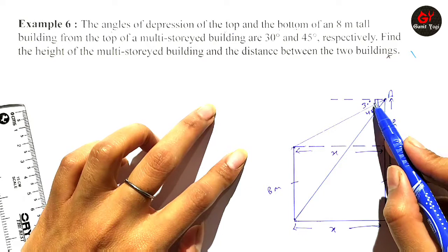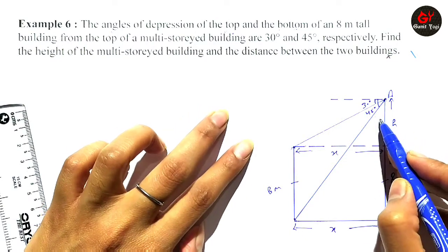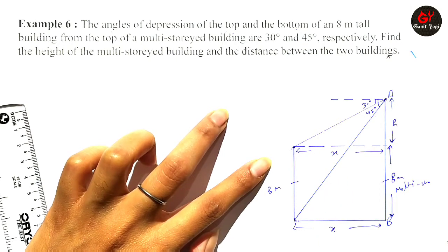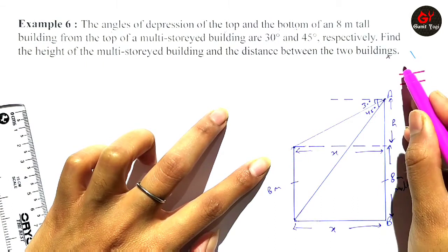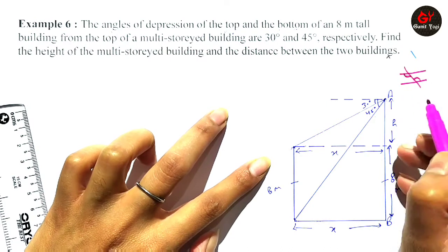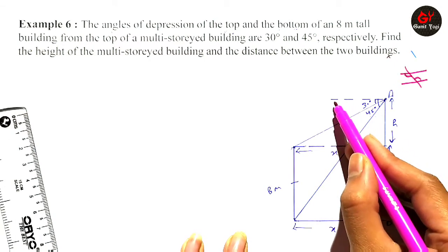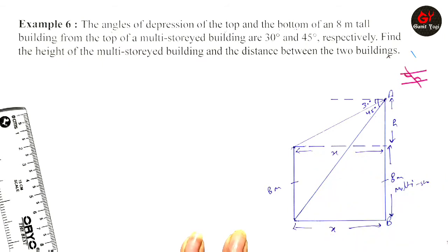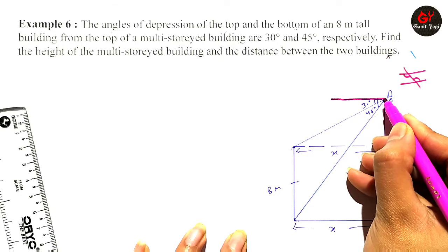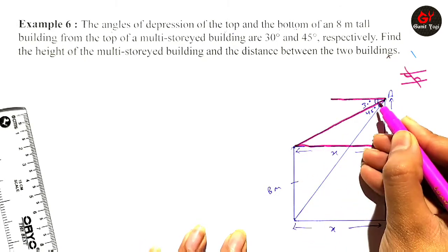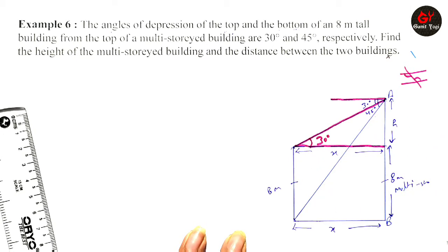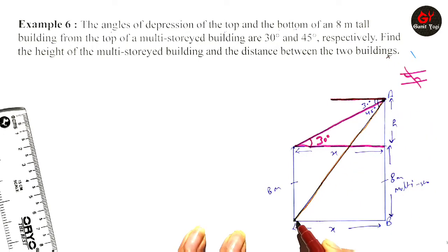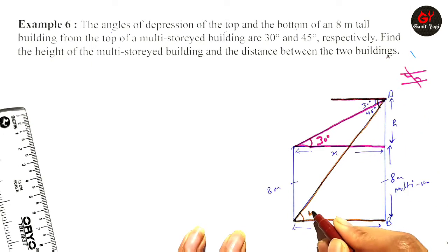We cannot directly solve using the depression angles, so we need to relocate the angles using the concept of alternate interior angles — the Z-angle property of parallel lines and a transversal. Using this, the angle of depression of 30 degrees becomes 30 degrees inside the triangle at the top, and the 45-degree angle of depression also becomes 45 degrees in the lower triangle.